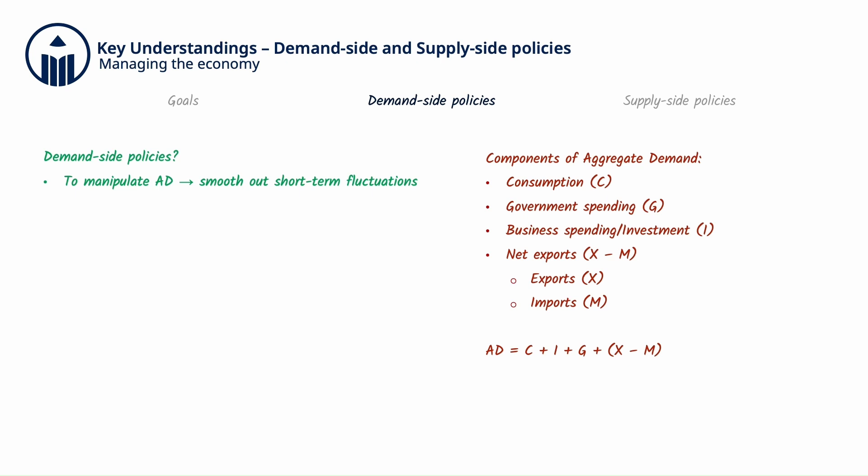Demand-side policies can be fiscal or monetary. Fiscal policy is the use of taxation and government expenditure (G) as tools to manipulate AD. The level of taxation affects consumption (C). Fiscal policy is usually controlled by the country's parliament or congress.